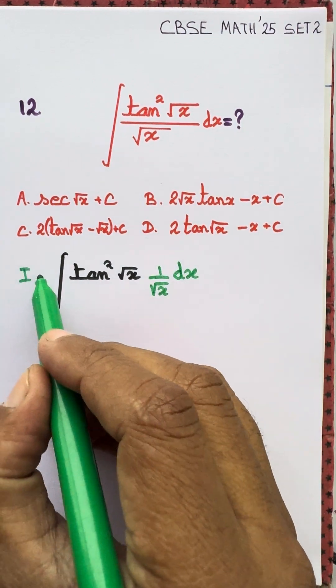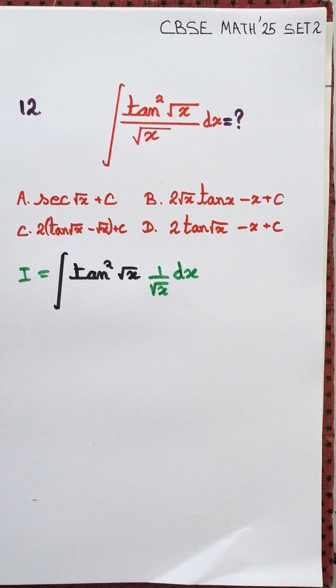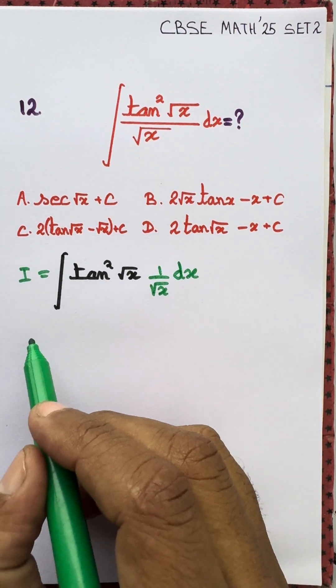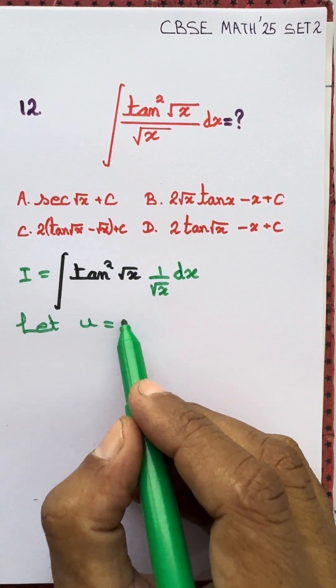We let I equal to integral of tan squared root x by root x dx, and then we let u equal to root x.